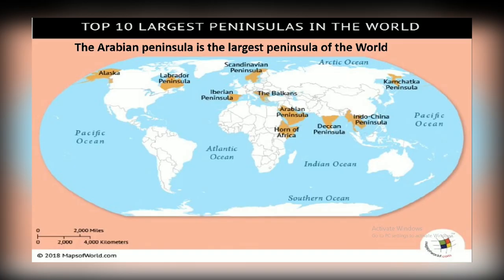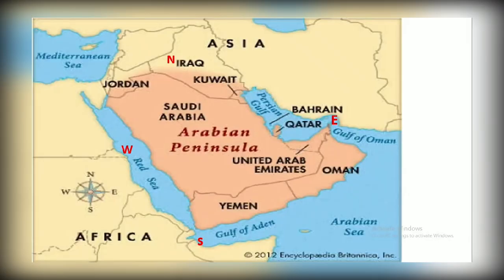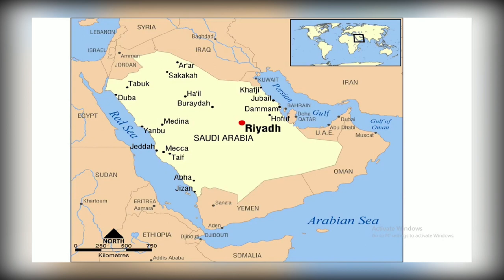Jordan and Iraq are its neighboring countries in the north. Kuwait is the neighboring country to its northeast. Qatar, Bahrain and UAE are its neighboring countries in the east. Oman is in the southeast and Yemen in the south. Riyadh is the capital of Saudi Arabia.